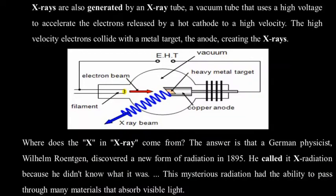X-rays are produced using a device with a very high-tension voltage — up to about 20,000 kilovolts — in a vacuum. We have the X-ray beam coming out from the copper anode and heavy metal within that region, and the electron beam striking the surface. When the electrons strike the surface of the metal, X-rays are emitted.